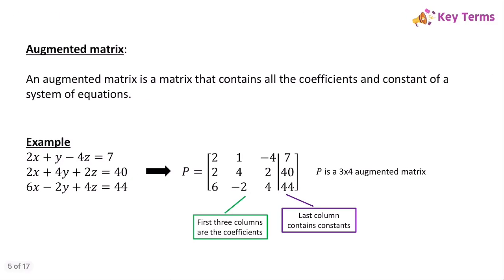To use Gaussian elimination, we need to first set up what's called an augmented matrix. An augmented matrix has all the coefficients and the constants of a system of equations. For this system of equations, it is represented with this augmented matrix. The first three columns contain all the coefficients, and the last column, separated by a line, contains all the constants.